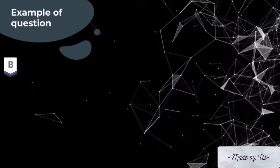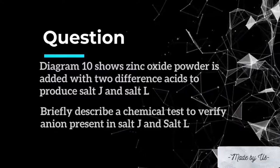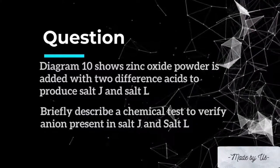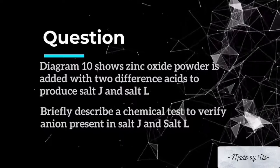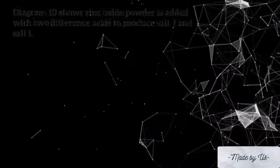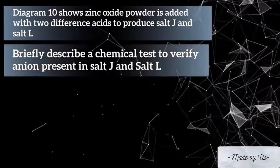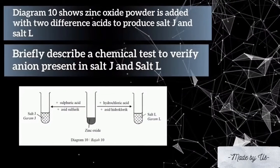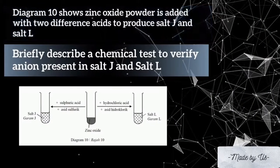Here is an example question. The diagram shows zinc oxide powder added with two different acids to produce salt J and salt L. Describe a chemical test to verify the anion presence in salt J and salt L.